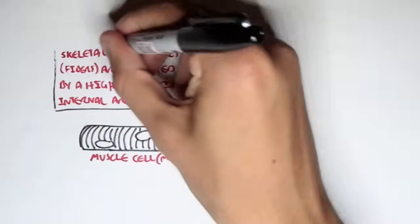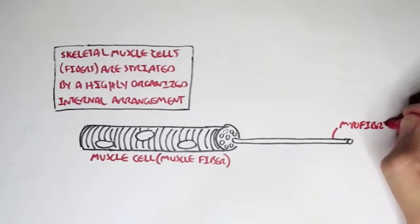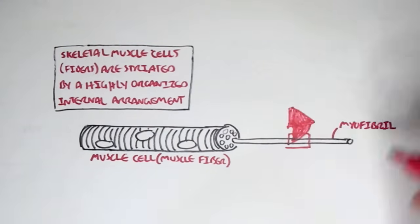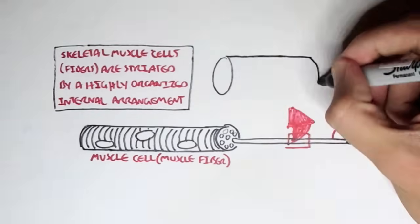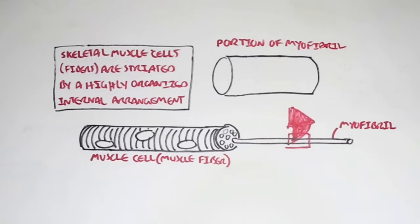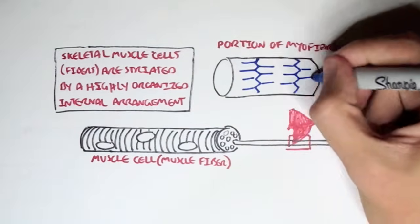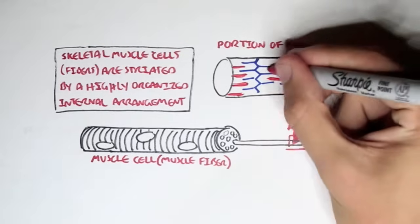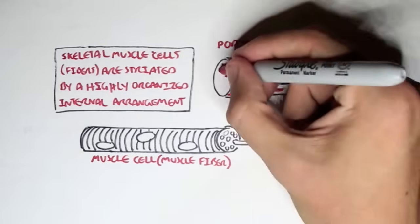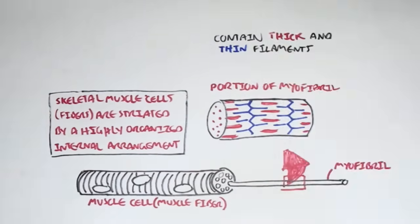So this muscle fiber has an internal arrangement. If we pull some things out from this muscle fiber, we can find myofibrils. So the muscle fiber contains many myofibrils. And if we take a portion of this myofibril, we can see that it's made out of some interesting structures known as the thin and thick filaments. So the myofibrils contain thick and thin filaments.